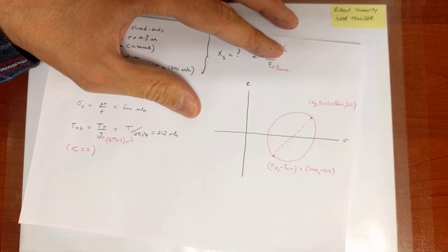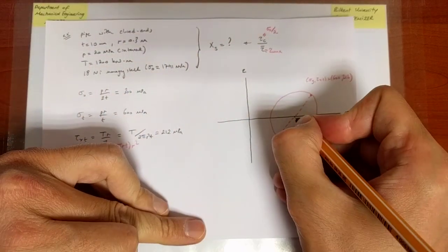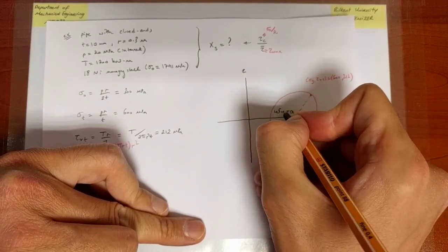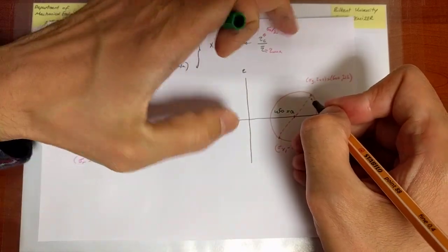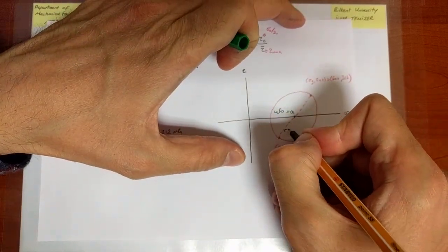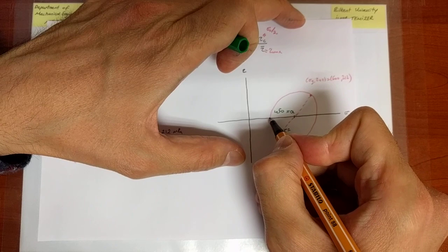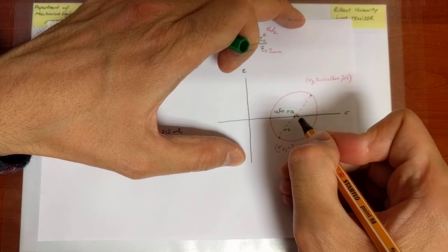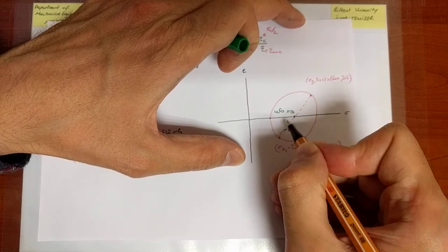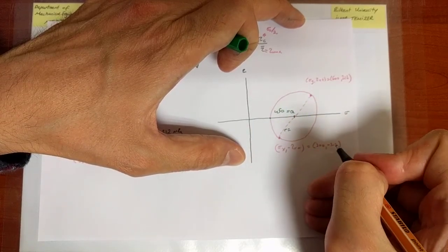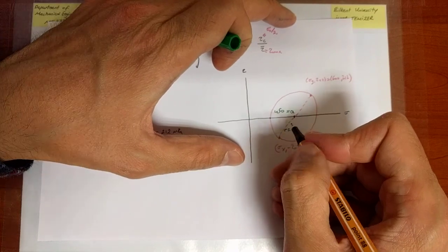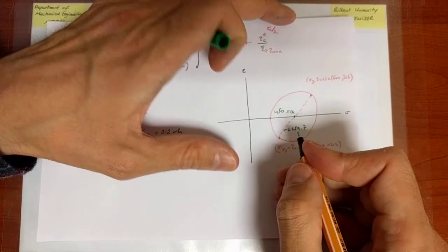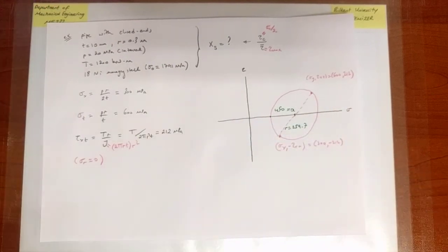The center of the circle is at a = (600 + 300) / 2 = 450 MPa. The radius of the circle is the square root of (600 − 450)² + 212², which is the square root of 150² + 212². If you calculate that, you find it is approximately 259.7 MPa.